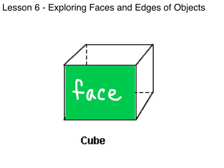Where two faces meet, we call that an edge. This red line here is an edge because it is the place where this green face meets this side face here.